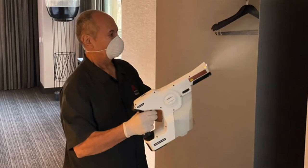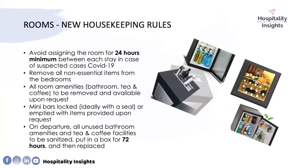Turn-down service has been removed. In five-star properties, there used to be two cleaning times — once at 10 or 11 a.m. and turn-down at 5 or 6 p.m. Turn-down at 5 or 6 p.m. has been removed completely. During the 10–11 a.m. service, housekeeping also advises guests not to be in the room while it is being cleaned. Some amenities such as soap and shampoo are now covered with plastic pouches to ensure they are not touched by anyone before the guest.